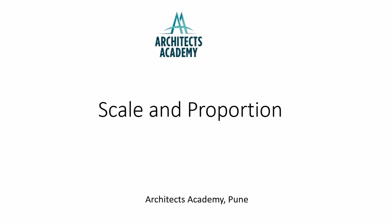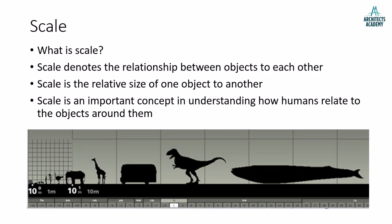Hello and welcome to another video lecture from Architects Academy. Today we are going to learn about what is meant by scale and proportion. Scale denotes the relationship between objects to each other. Different objects shown on a line illustrate their scale — for example, the scale of an elephant to a double-decker bus, and the scale of that bus to a whale. Scale is the relative size of one object to another.